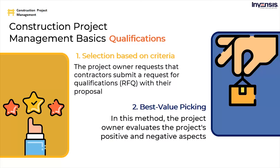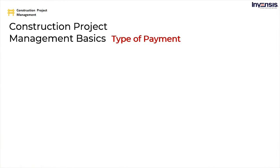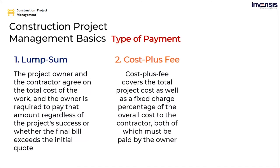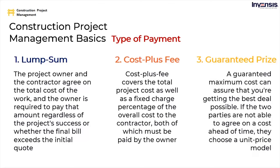After an owner has chosen a contractor, the next step is to arrange a payment agreement. Four common payment options exist: a lump sum contract, where the owner and contractor agree on a total cost regardless of outcome; cost plus fee, covering total project cost plus a fixed fee percentage paid to the contractor; guaranteed maximum price; and a unit price model, where the owner pays a set unit price for each phase if parties cannot agree on a cost ahead of time.